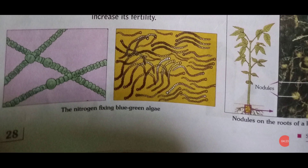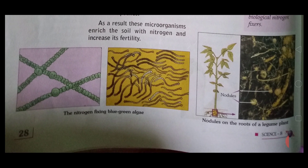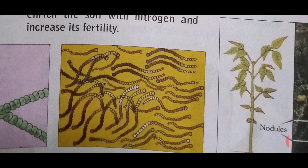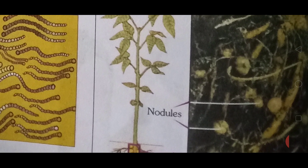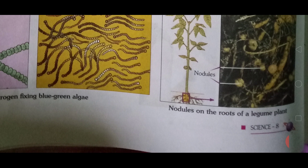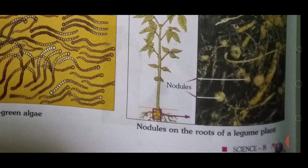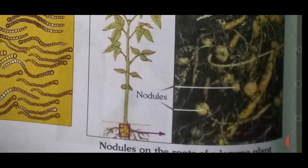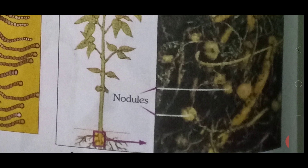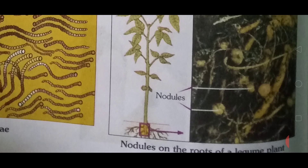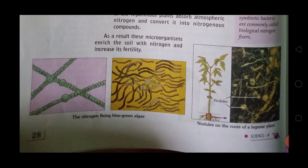Here is the nitrogen-fixing blue-green algae — you can watch it. And here are the root nodules on the roots of leguminous plants. If you have a leguminous plant, such as a pea or any pulse crop, and you remove it from the soil and wash it with water, you can see the nodules. These nodules contain nitrogen-fixing bacteria that help in nitrogen fixation.